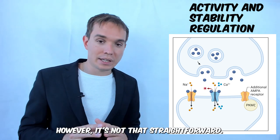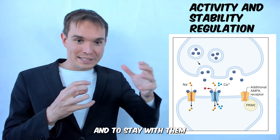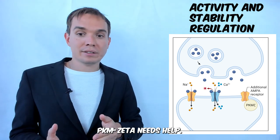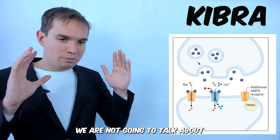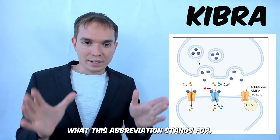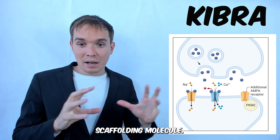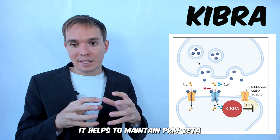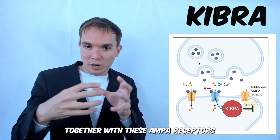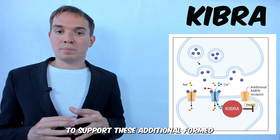However, it's not that straightforward. To physically reach these AMPA receptors and to stay with them, PKMζ needs help. And here we have another molecule which is a protein named KIBRA. This protein is a postsynaptic scaffolding molecule, and by forming a stable complex with PKMζ it helps to maintain PKMζ together with these AMPA receptors, and therefore support these additionally formed AMPA receptors.